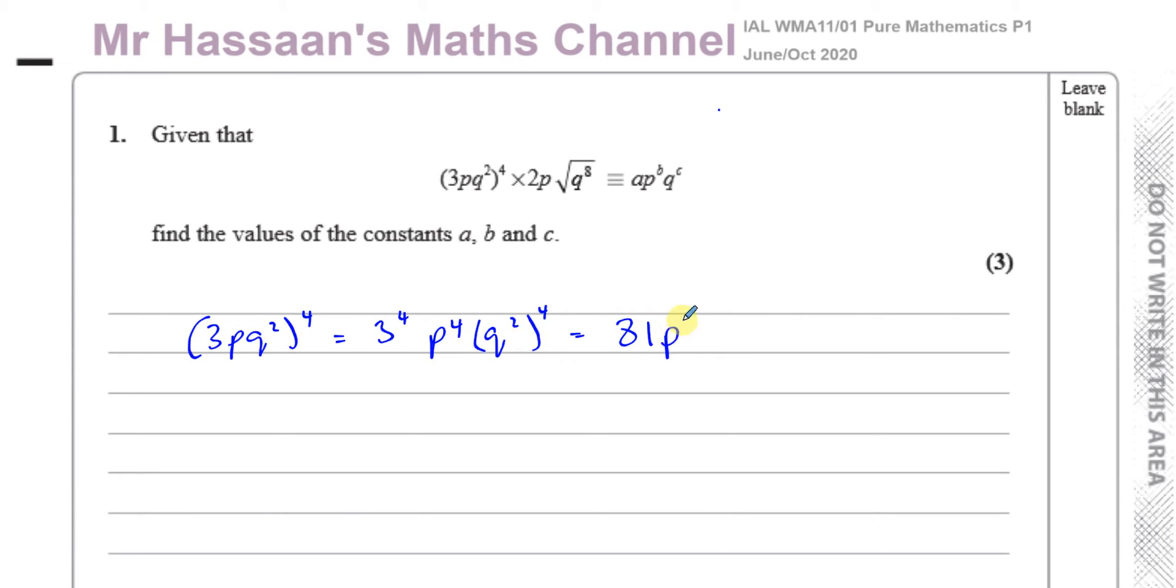And P to the power of 4, well, it's P to the power of 4. And here we have to multiply the power, so it's Q to the power of 2 times 4, which is Q to the power of 8. Okay, now remember, when you raise something to a power, to another power, you multiply the powers together. Okay, so that's Q to the power of 8.